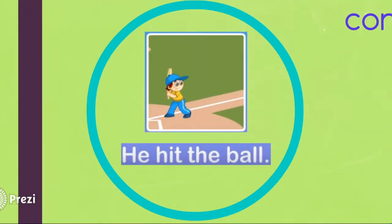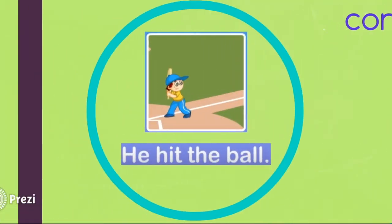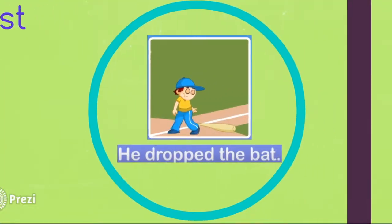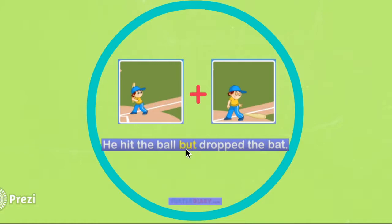In this example, it says he hit the ball. He dropped the bat. What we would put in between these two phrases since we are contrasting him hitting the ball and dropping the bat is but. So it would say he hit the ball but dropped the bat.